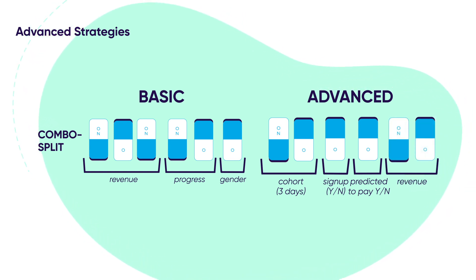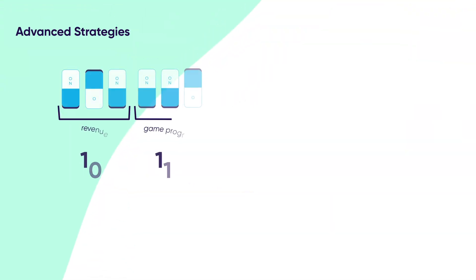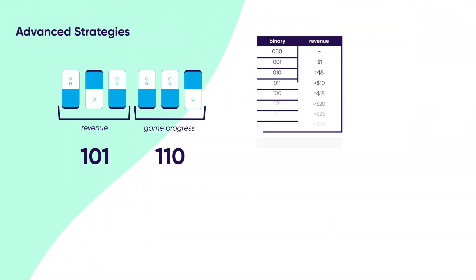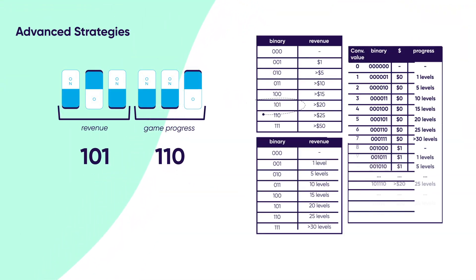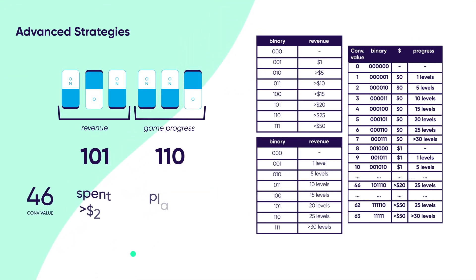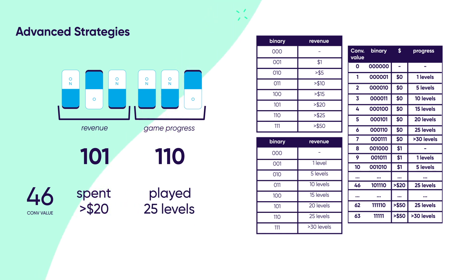The advanced combo split also uses 2 final bits to measure revenue. Your end result might look something like this. Don't worry if it seems complicated — these more advanced strategies may take a bit more time to understand and get exactly right.